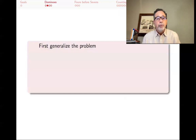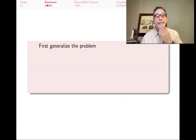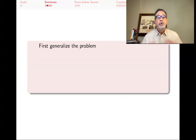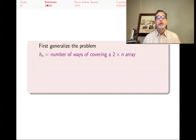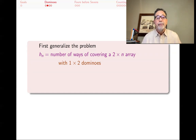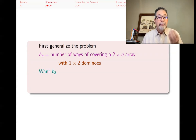This is just a specific problem with a specific number as the answer, but I'm not going to try to find that directly. Instead, I'm going to do something that might seem a little counterintuitive at first: make the problem harder by generalizing it. I'll put this problem in the context of a sequence of problems, and then try to find a recurrence relation. So instead of saying I have a two-by-eight array, I will say: the number of ways of covering a two-by-n array using one-by-two dominoes is H(n). The thing I'm finally looking for is H(8).